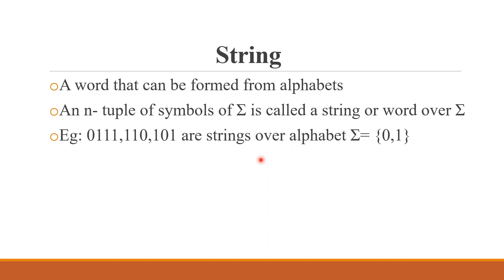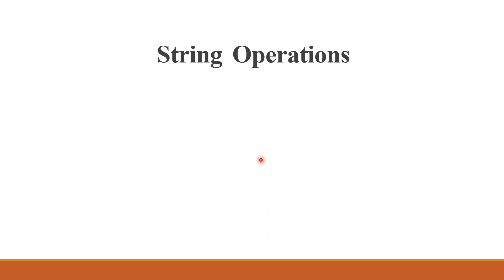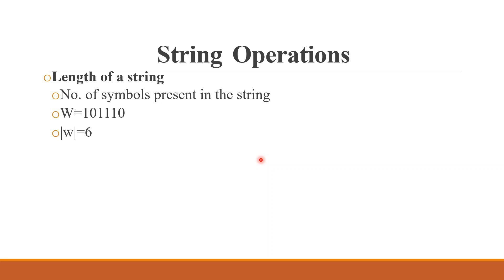Let us move to string operations. The first operation is the length of a string, which is the number of symbols present in the string. Strings are generally represented using variables w, u, v. For example, if w equals 10110, then we count the symbols: 1, 2, 3, 4, 5 — so the length of w is 5.